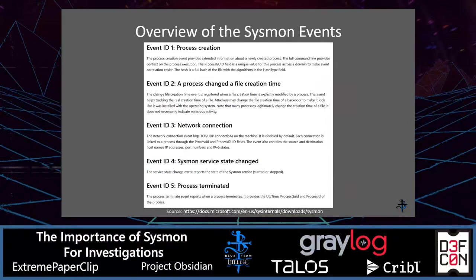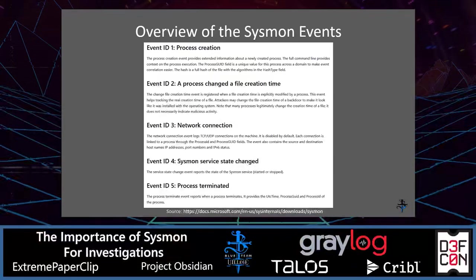Let's do an overview of the events. Event ID 1 is process creation — two really interesting things about it are that you get the command line and a hash of the process. Event ID 2 is process changed the file creation time. Event ID 3 is network connection, very useful. Event ID 4 is Sysmon service state changed — you can see in the logs if Sysmon was stopped. Event ID 5 is process terminated.